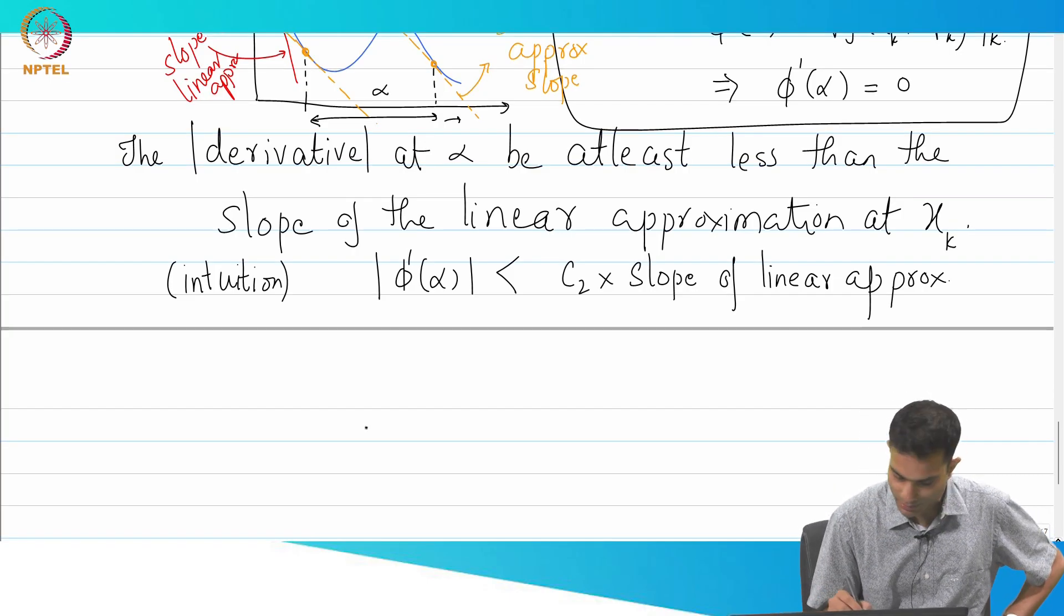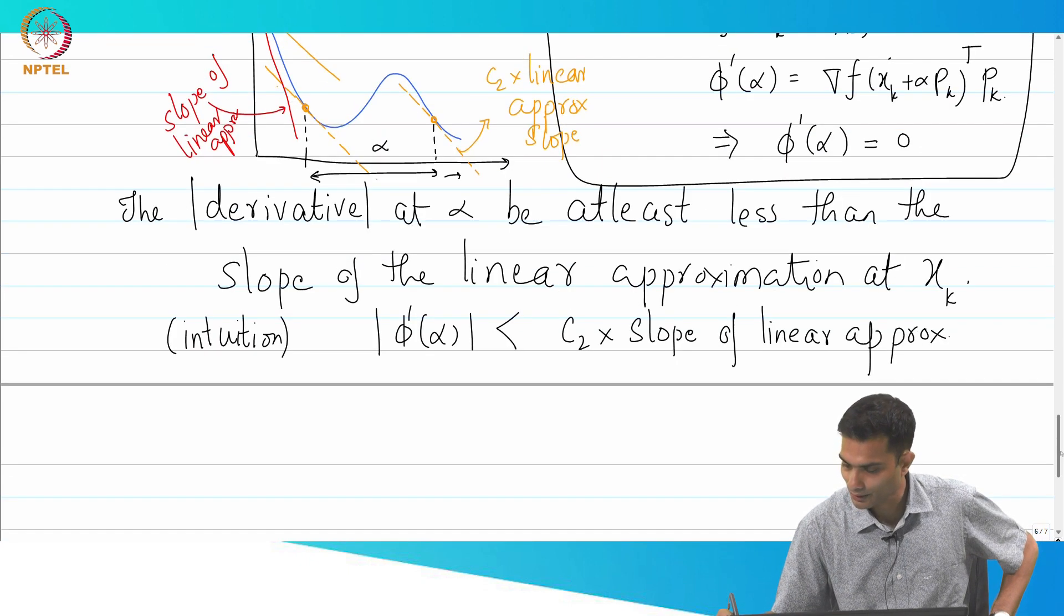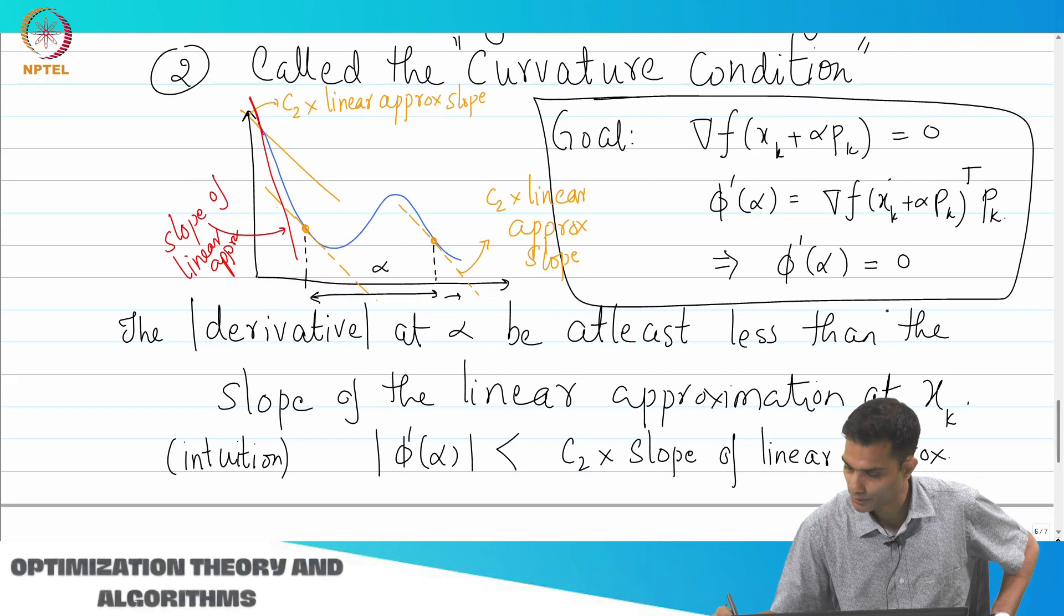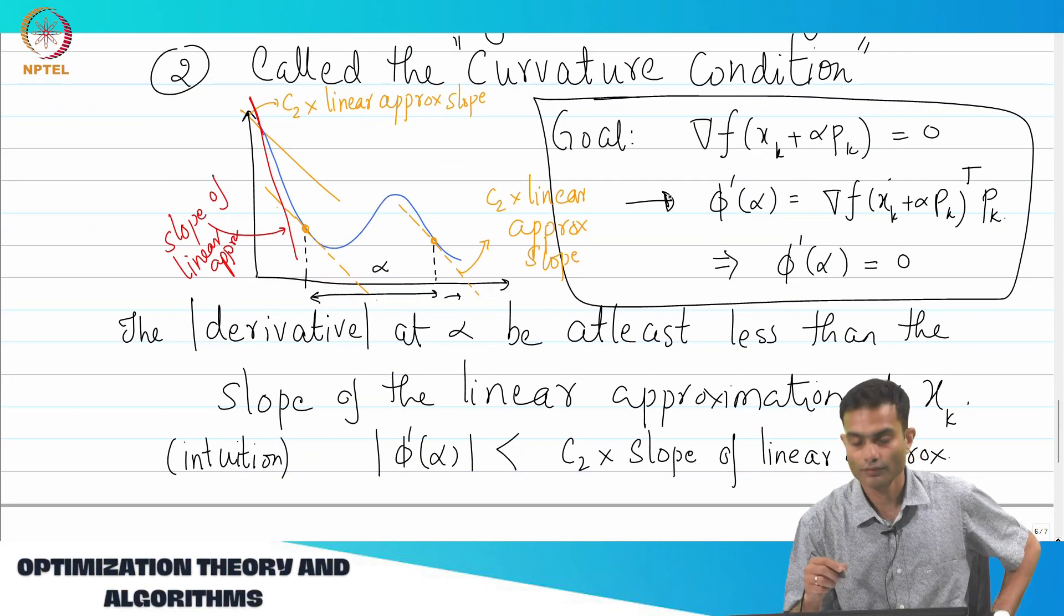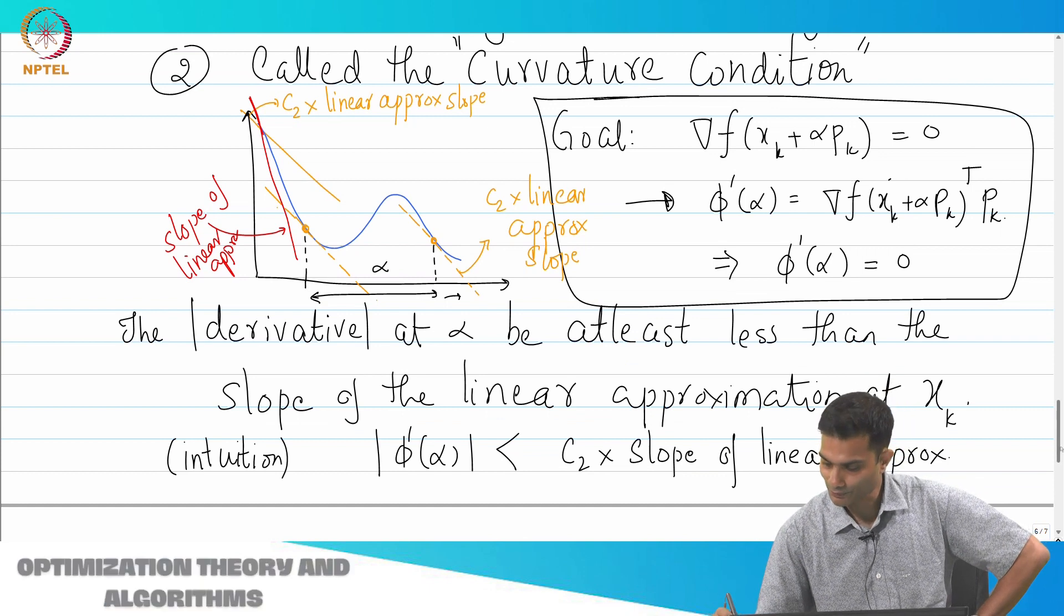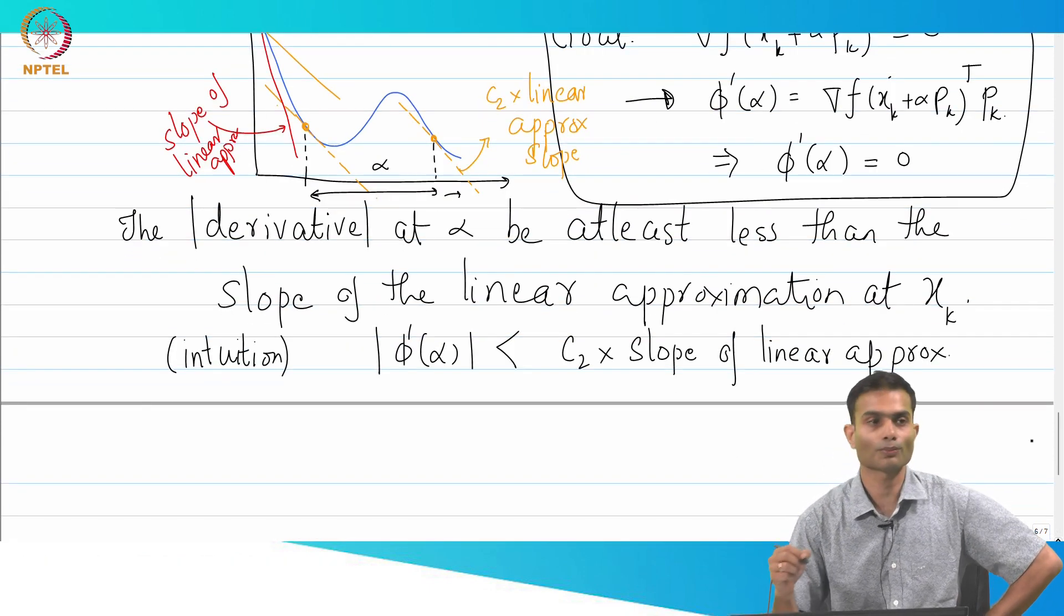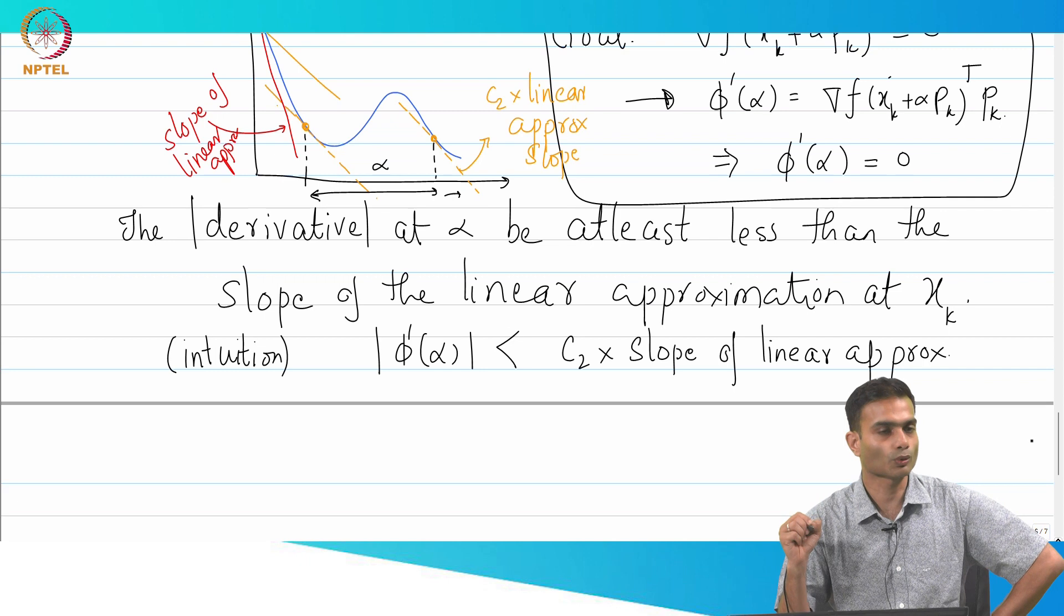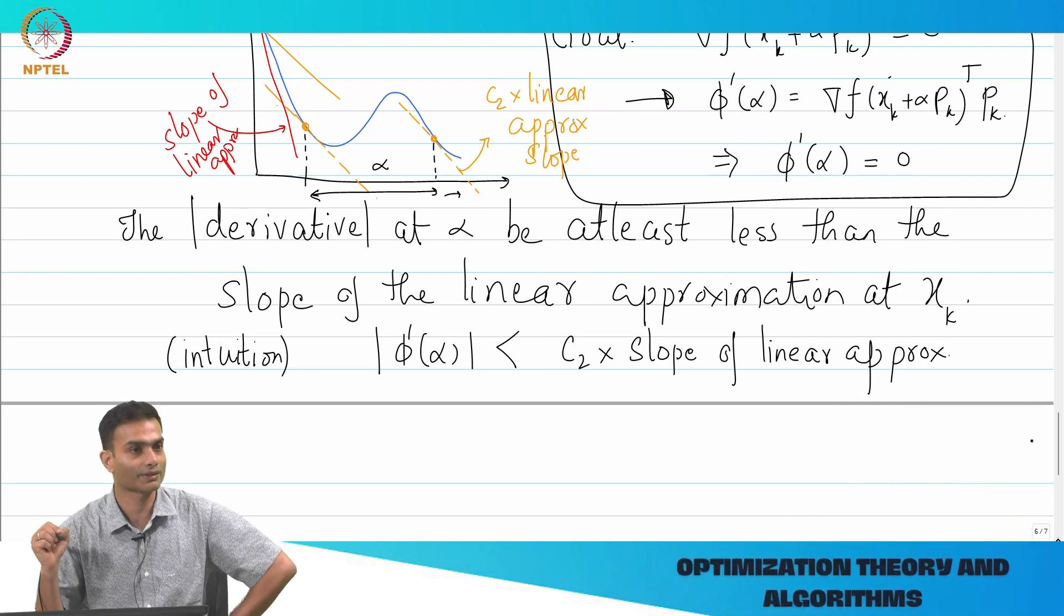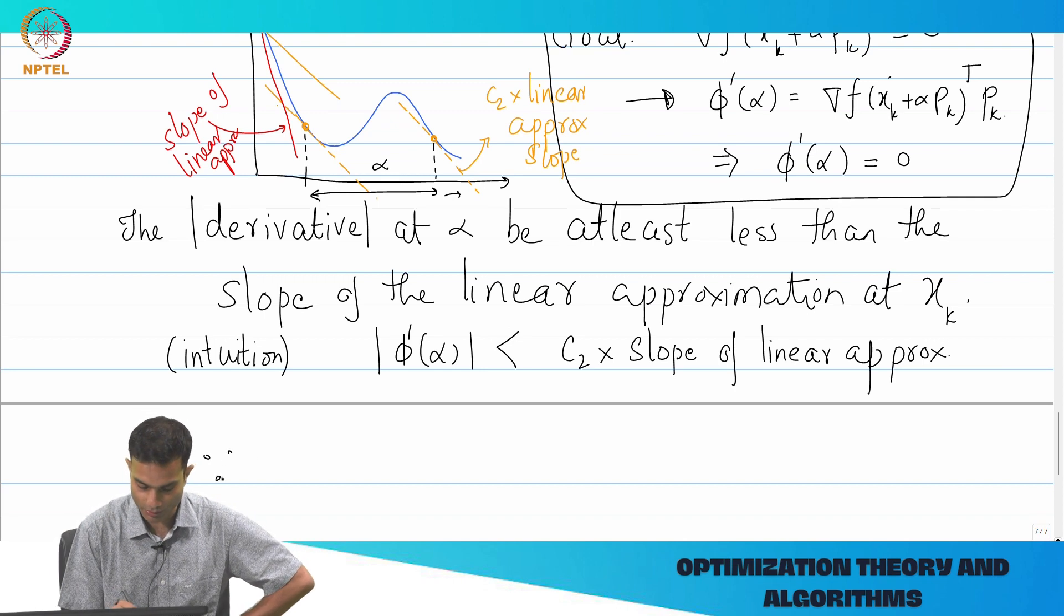Now, the way it is typically written, this is the expression to keep in mind. Slope means φ' of α. So φ' of α is this. Now for small values of α, this slope is negative, because it is a descent direction.